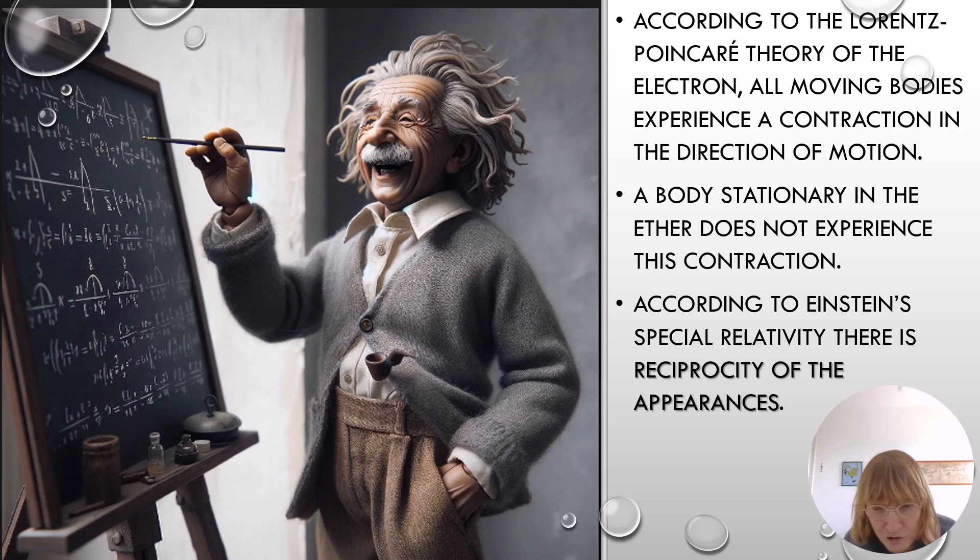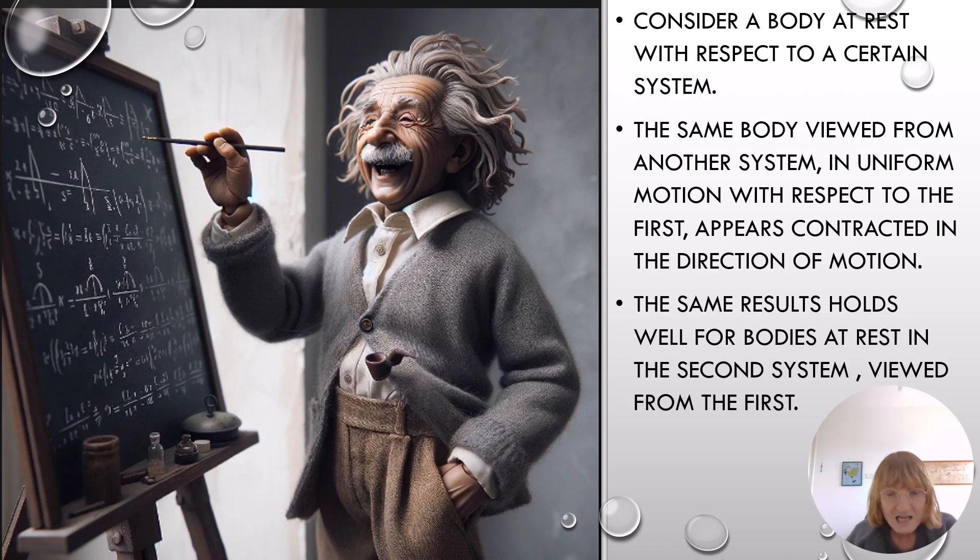According to the Lorentz-Poincaré theory of the electron, all moving bodies experience a contraction in the direction of motion. A body stationary in the ether does not experience this contraction. According to Einstein's special relativity, there is reciprocity of the appearances. Consider a body at rest with respect to a certain system. The same body viewed from another system in uniform motion with respect to the first appears contracted in the direction of motion. The same result holds well for bodies at rest in the second system viewed from the first.